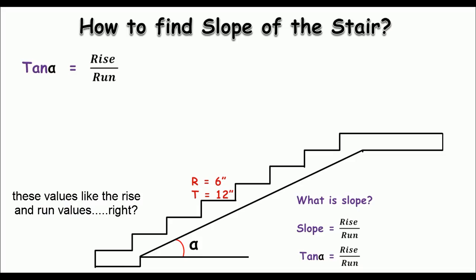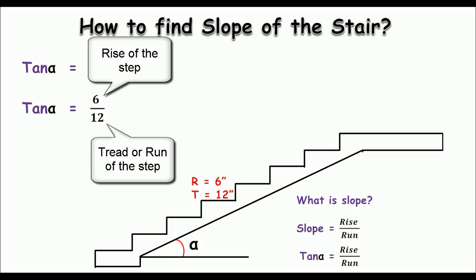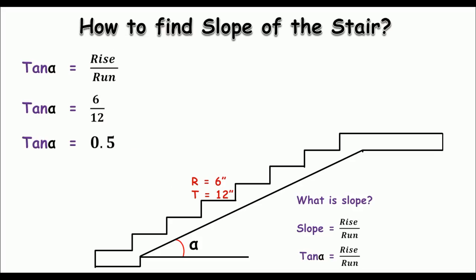I can do the plug and chugging for these values like the rise and run values. The rise is just 6 inches and the 12 inches represent the run. So the tangent of alpha must be equal to 6 by 12, and 6 by 12 is just of course 0.5.